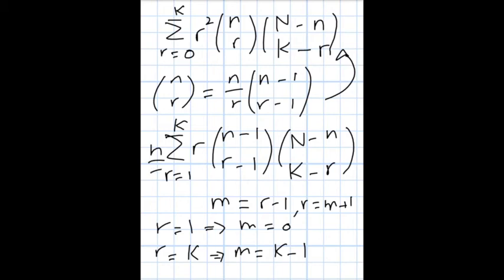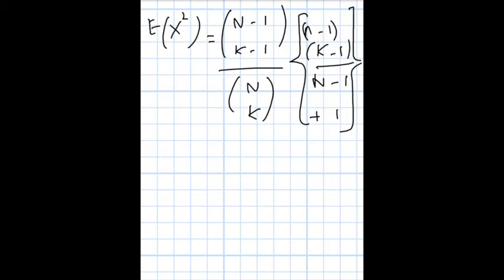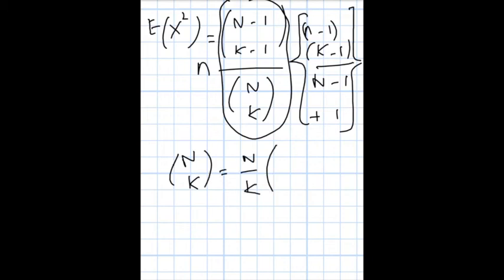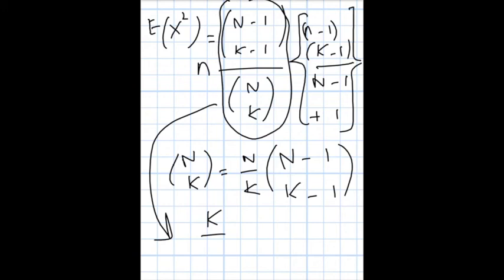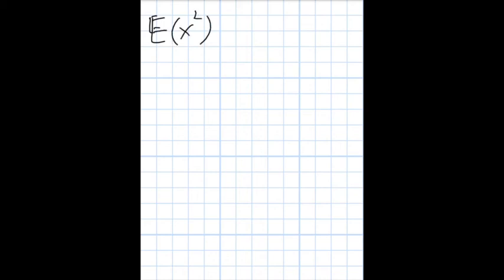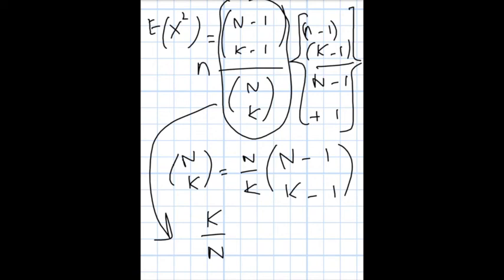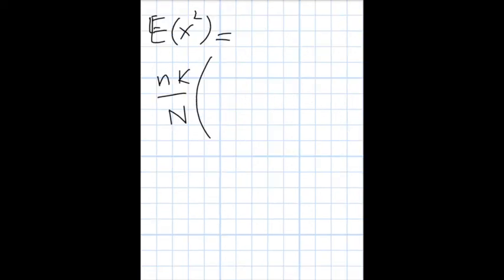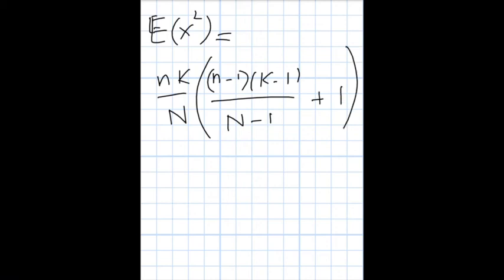We use the identity C(n,k) = (n/k) times C(n-1, k-1), so this term becomes k over n. Our second moment E[X²] equals n times k over n, times C(n-1, k-1) over C(n-1, k-1), which simplifies to n*k over n times (n-1)(k-1) over (n-1), plus 1.